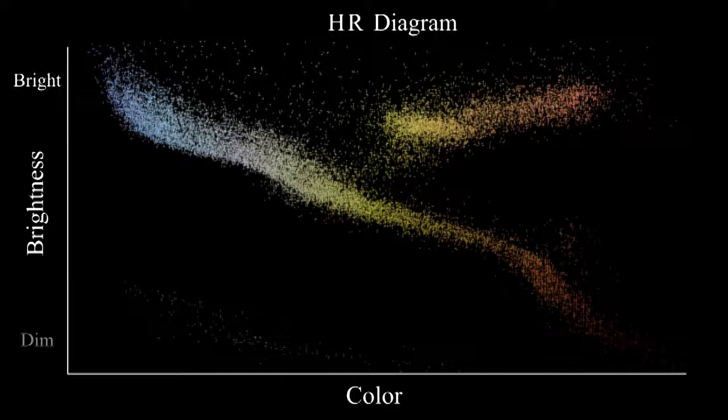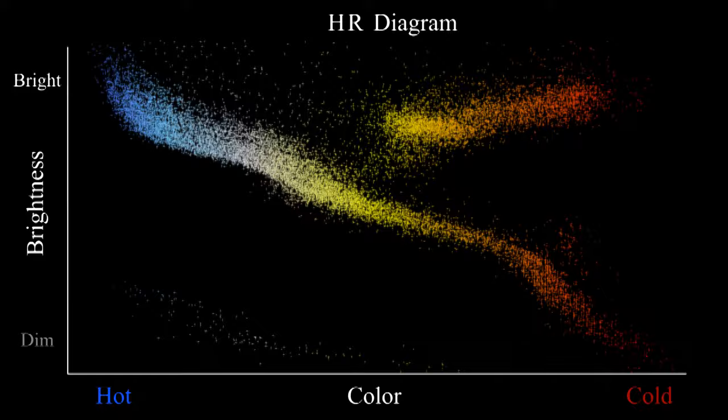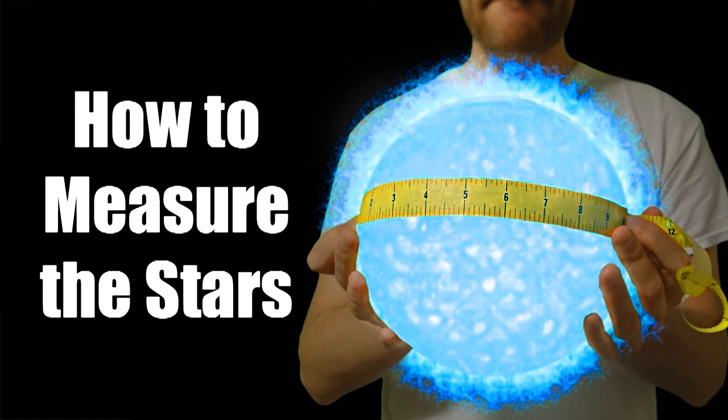Color and temperature go left to right. Hot blue stars are on the left, and cold red stars are on the right. The brightness and color of a star can be directly measured. I made another video explaining how to do this, called How to Measure the Stars.